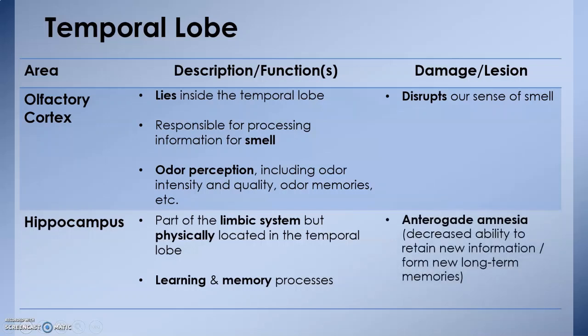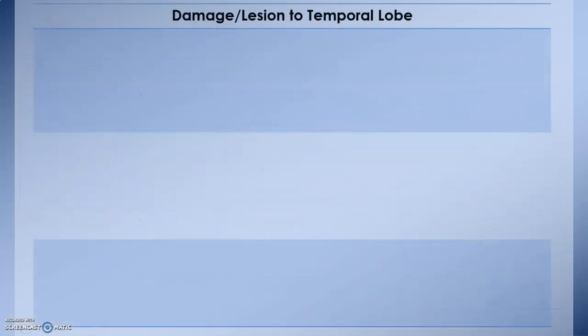What happens if your hippocampus gets damaged? Anterograde amnesia. That is the term you have to learn to associate with hippocampus. If there is a lesion or damage to the hippocampus area, it will result in anterograde amnesia—that is, you will not be able to form new memories, more specifically new long-term memories.